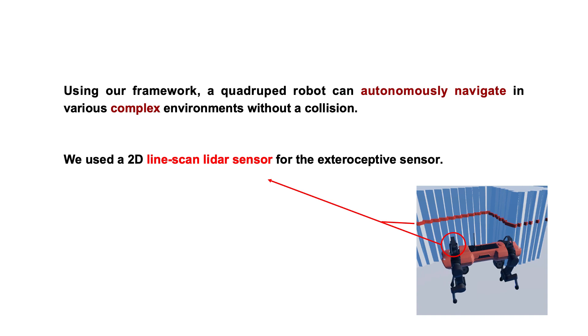Using our framework, a quadruped robot can autonomously navigate in various complex environments without a collision. We used a 2D line-scan LiDAR sensor for the exteroceptive sensor.